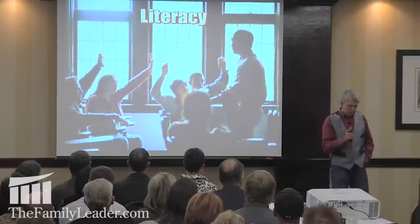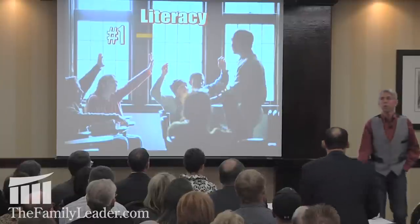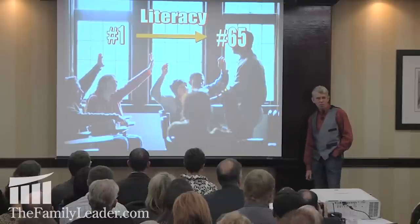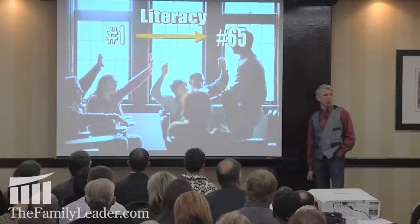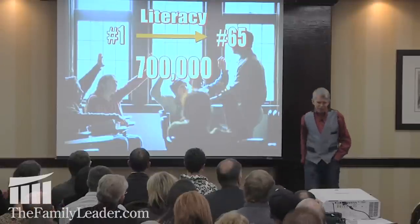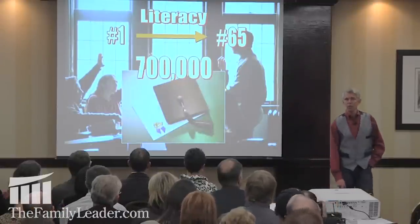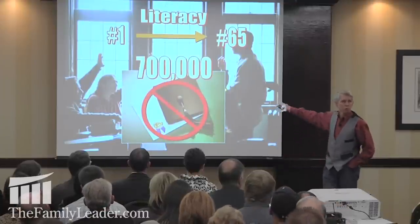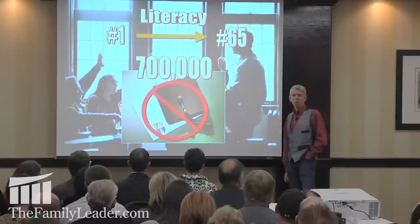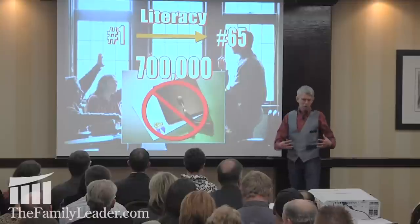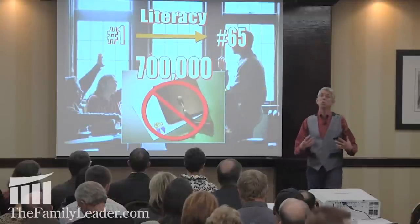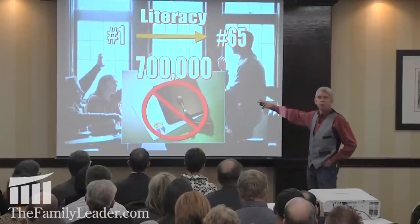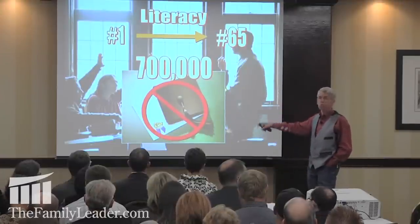In 1962-63, we were number one in the world in literacy. We have now dropped to number 65 in the world in literacy. America gets beaten by all sorts of other nations in international testing. We now average about 700,000 students a year who graduate from high school and cannot read their own diploma. The functional illiterates in America reading at third grade or less — we're looking at 700,000 a year. That's not good for the workforce.